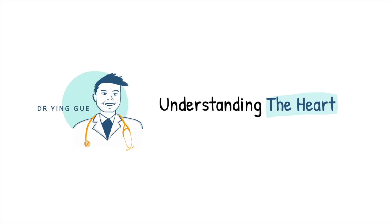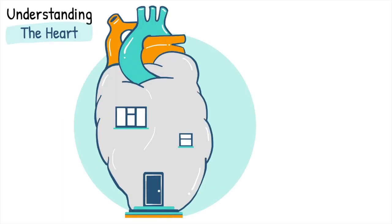The heart is one of the many organs in our body. It is like a house separated by the septum and valves into different rooms where blood can travel in and out of. It functions as a pump to move blood around, so oxygen and nutrients can be provided to the other cells to keep us alive and allow us to function. Just like our house, the functioning of the heart relies heavily on the different parts. When these parts malfunction, it will result in different kinds of illnesses.